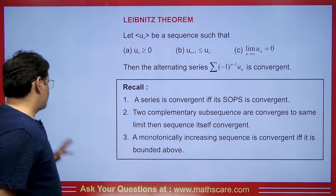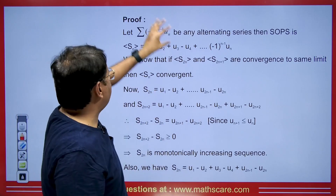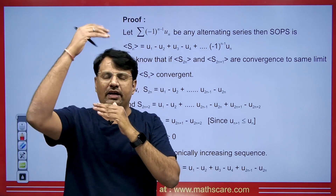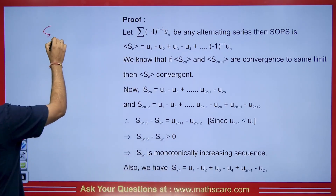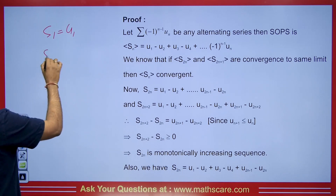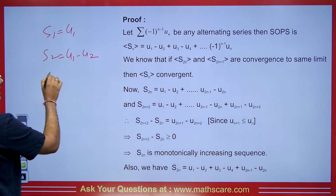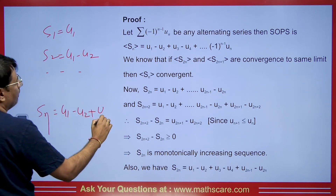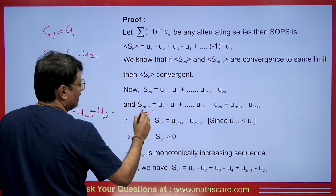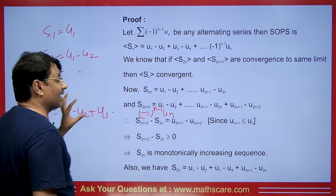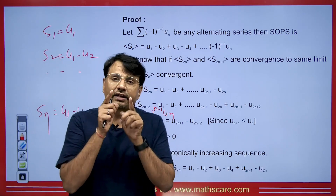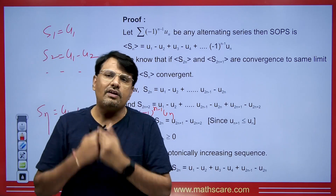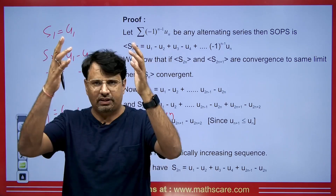Let's now see the proof of Leibniz's theorem. If we have any infinite alternating series, we take its sequence of partial sums: S1, S2, and so on. S1 equals u1, S2 equals u1 minus u2, and in general, S_n equals u1 minus u2 plus u3 minus ... plus minus 1 to the power n minus 1 times u_n. At n tends to infinity, if this value is finite, the series converges.